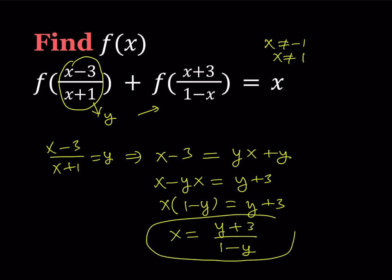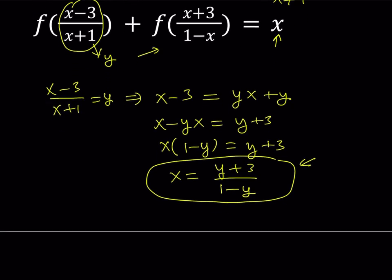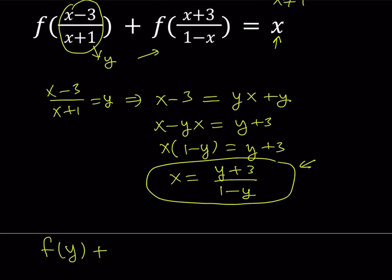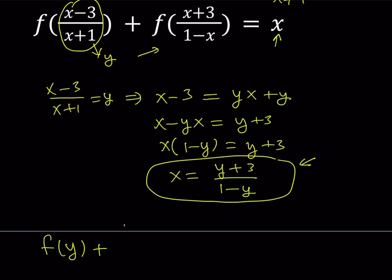This allows me to replace x in the second part of the equation. The first term becomes f of y, and now I replace x with (y plus 3) over (1 minus y) in the expression (x plus 3) over (1 minus x). That gives us (y plus 3) over (1 minus y) plus 3, divided by 1 minus (y plus 3) over (1 minus y).